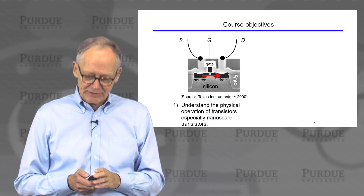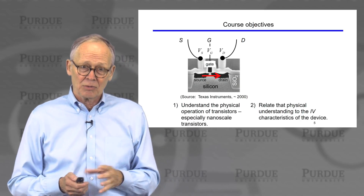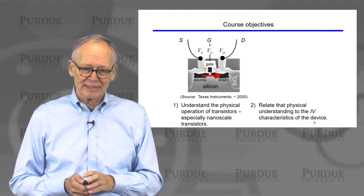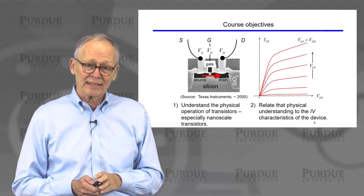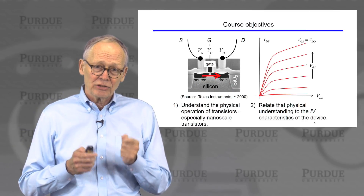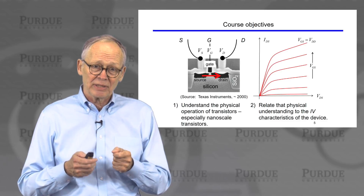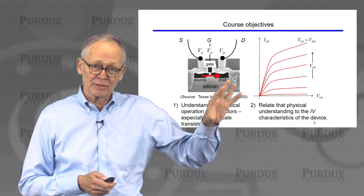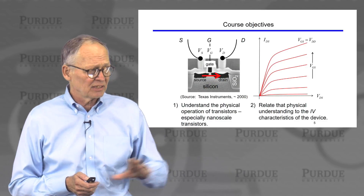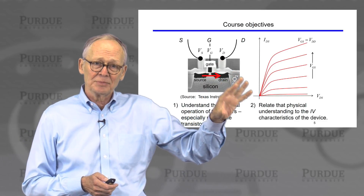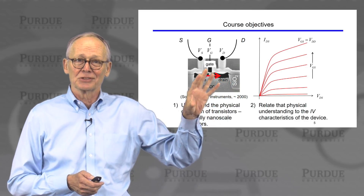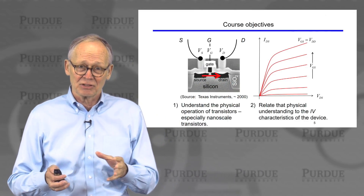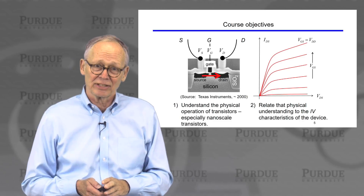We want to develop a physical understanding of how electrons and holes flow in these very small devices, and then relate that understanding to the currents we measure when we apply voltages to the terminals. We want to relate that physics to the current-voltage characteristics of the transistor, and understand what types of characteristics make transistors good in certain applications — digital electronics and analog electronics primarily.